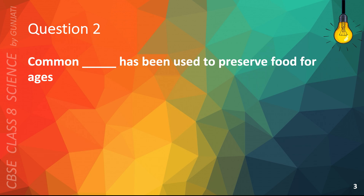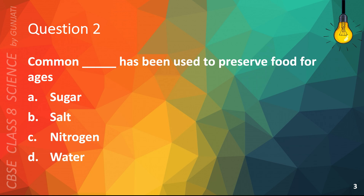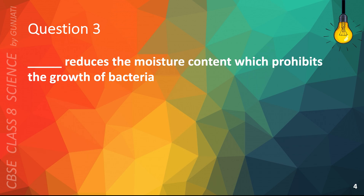Question 2. Common blank has been used to preserve food for ages. A. Sugar, B. Salt, C. Nitrogen, D. Water. The correct answer is B. Salt.